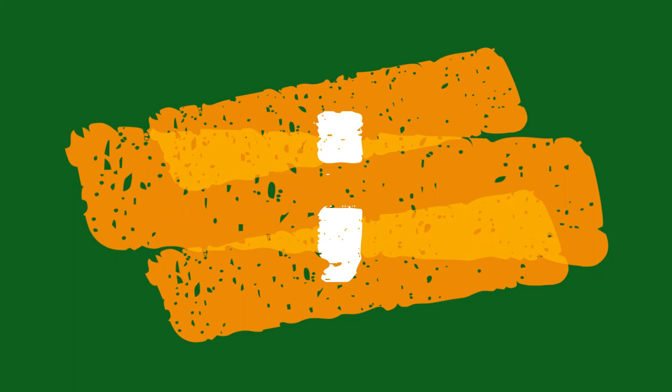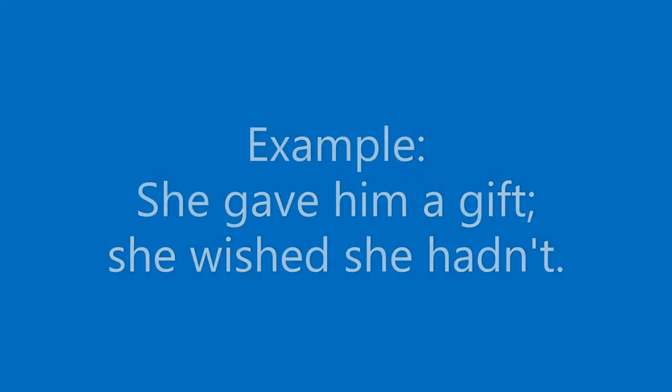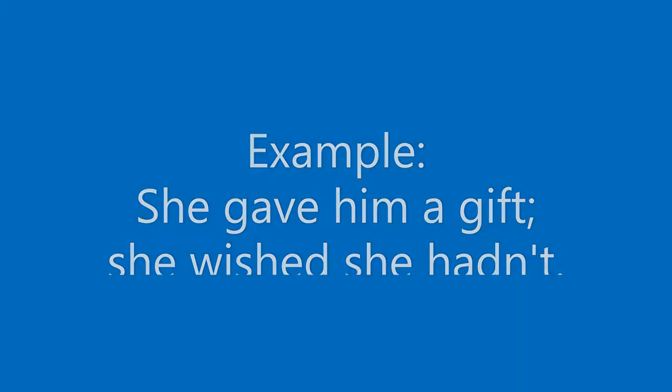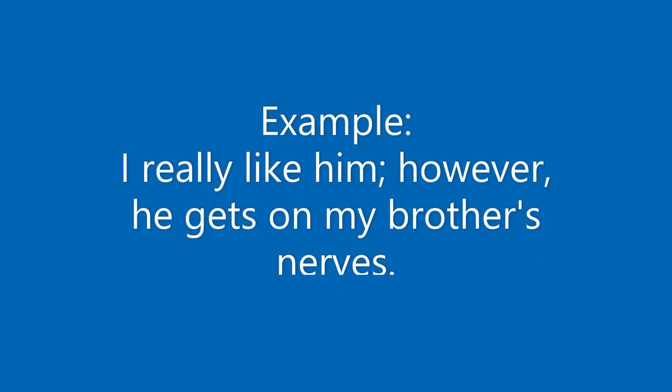The job of a semicolon is to join two sentences. Notice in this first example: 'She gave him a gift; she wished she hadn't.' The semicolon is separating two ideas but joining them at the same time. The first idea is 'she gave him a gift,' the second idea is 'she wished she hadn't.' You can replace that semicolon with a period and capitalize the second 'she' if you wish.